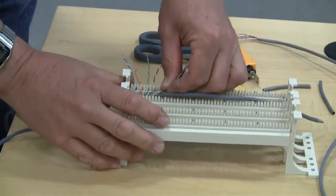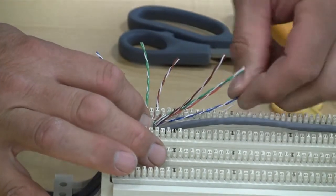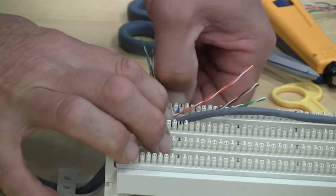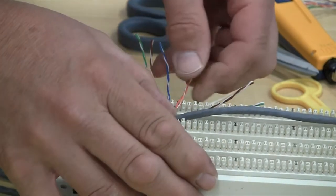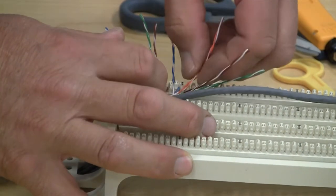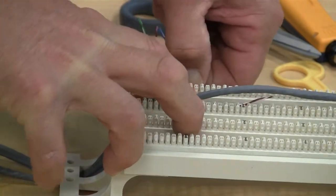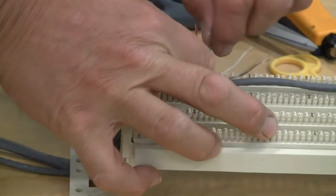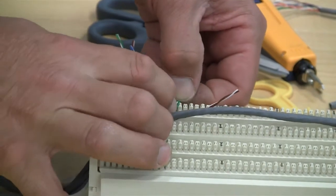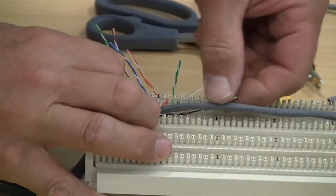Again, I'm going to keep the jacket as close as possible so we keep the integrity of the cable. And again, I'm going to start with the blue white on our second cable. Lay it down, the orange white, lay it down.